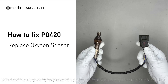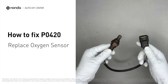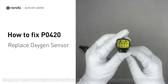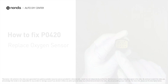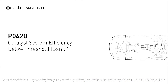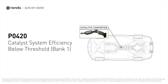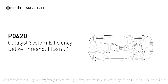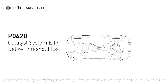By replacing the damaged oxygen sensor, you can easily fix the P0420 error code by yourself. P0420 is one of the most common error codes. It means your catalyst system efficiency is below threshold near engine bank 1, which indicates that the catalytic converter is not functioning efficiently, so the vehicle is increasing the output of harmful pollutants.